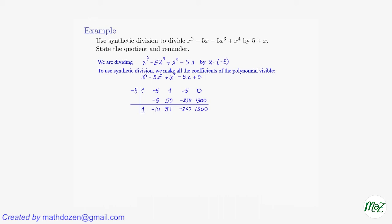So it's a bit faster than long division, and we see that the remainder is the very last number in the third line. All the other numbers are the coefficients of the respective powers of x — we start with the constant term, then x coefficient, x squared, and x cubed. So we can write the quotient as x cubed minus 10x squared plus 51x minus 260, and the remainder is 1300.